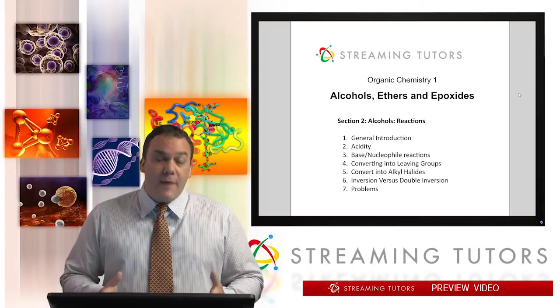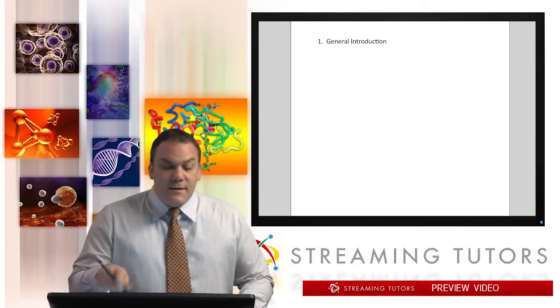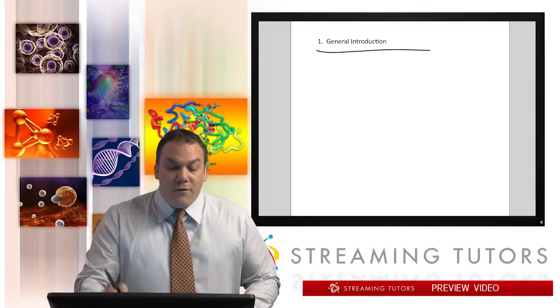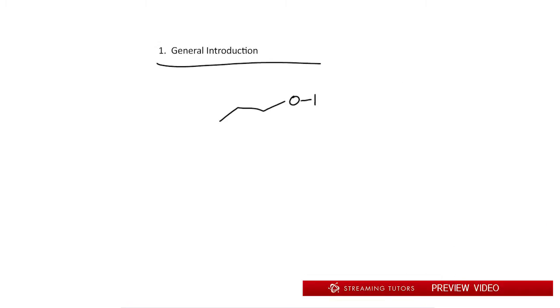Let's get started. The first thing I want to point out is this general introduction about how alcohols react. So let's consider an alcohol. Remember alcohols are sp3, so they have to have sp3 carbons that hold them. Remember that this is the alpha carbon, this is the beta carbon.